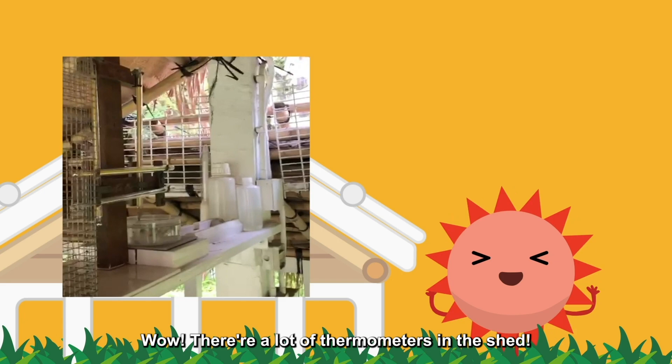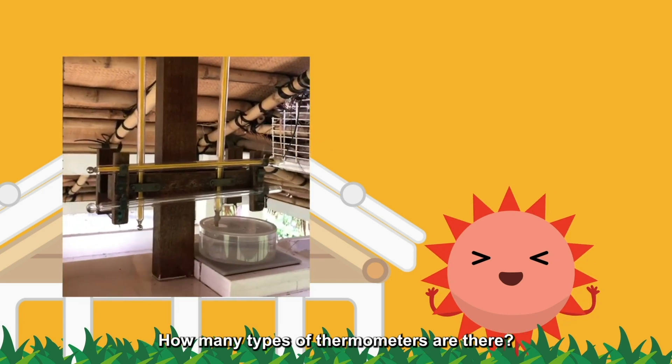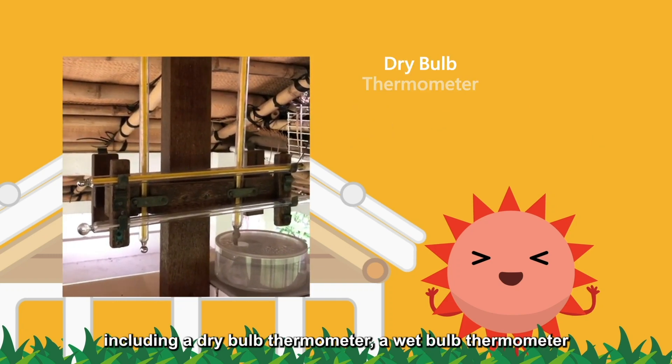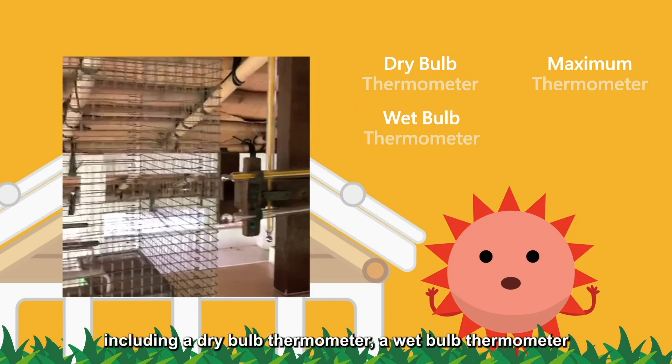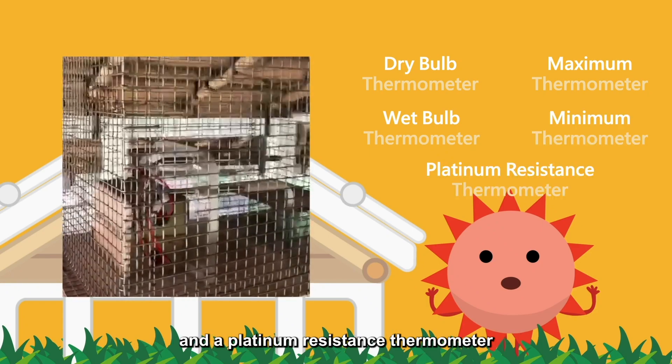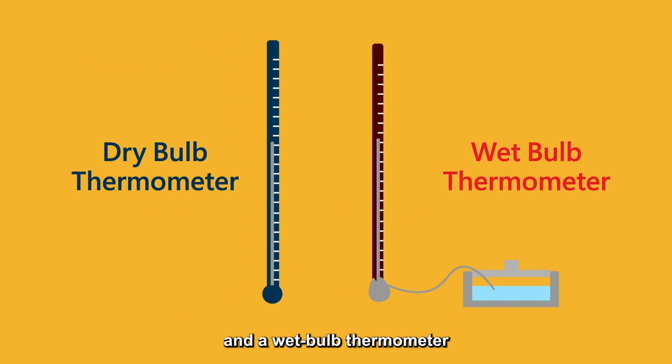Wow! There are a lot of thermometers in the shed! How many types of thermometers are there? A total of five types of thermometers are installed in the shed, including a dry bulb thermometer, a wet bulb thermometer, a maximum thermometer, a minimum thermometer, and a platinum resistance thermometer. These two erected thermometers are a dry bulb thermometer and a wet bulb thermometer.